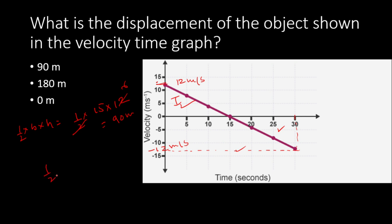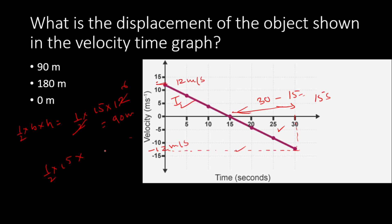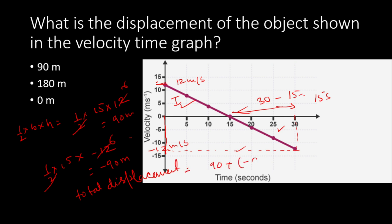For the second section (below the time axis), the height is taken as negative: area = ½ × (30 − 15) × (−12) = ½ × 15 × (−12) = −90 metres. Total displacement = 90 + (−90) = 0 metres. So in this case the displacement is zero.